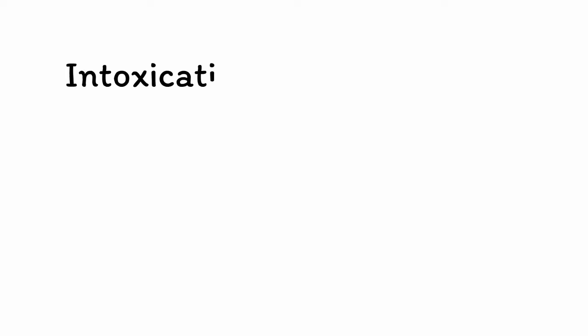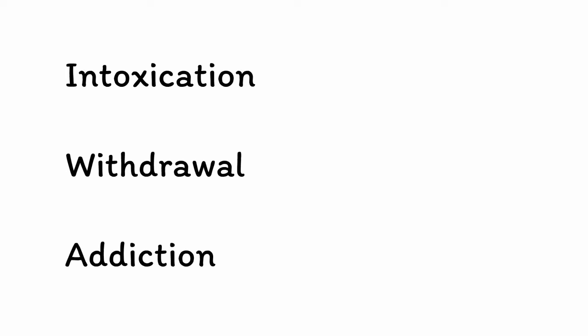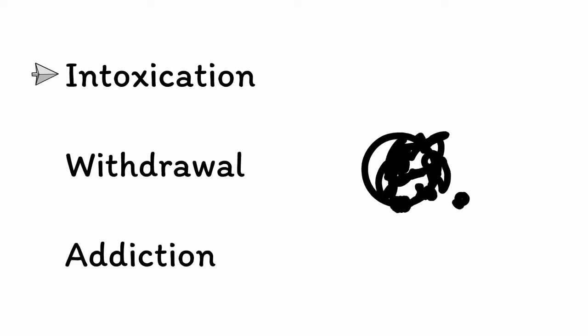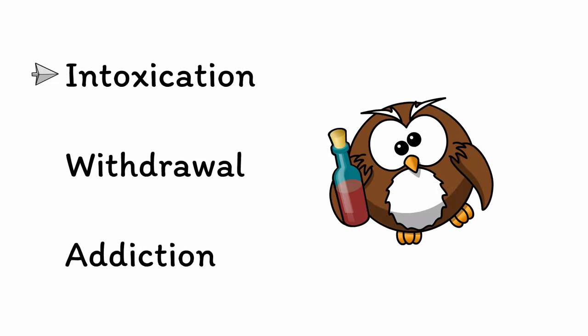People can experience problems related to substances in three ways: intoxication, withdrawal, and addiction. These three things are closely related, but they are ultimately separate conditions, so it's important to get them straight from the get-go. Intoxication is an acute state of being under the influence of a psychoactive substance, with the specific mix of signs and symptoms associated with each substance being known as its toxidrome.